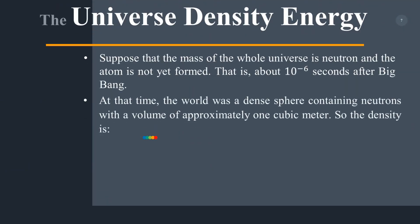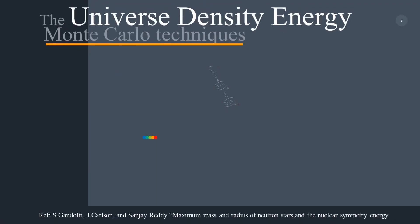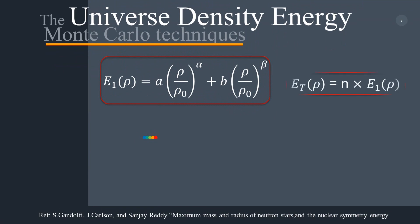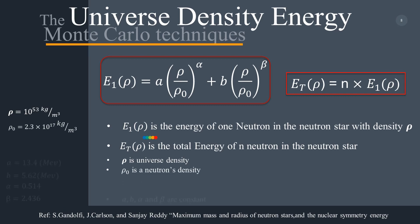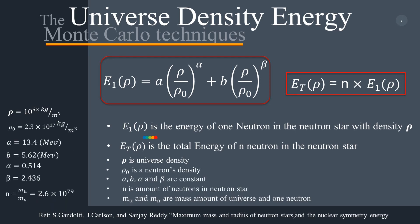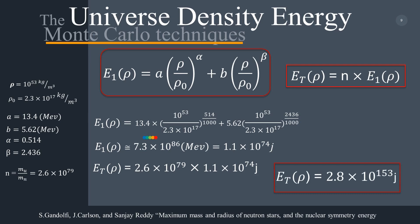At that time the universe was a dense sphere containing neutrons with a volume of approximately one cubic meter. The density is 10 to the power of 53 kilograms per cubic meter. Here, E1(ρ) is the energy of one neutron in the neutron star with density ρ, and E_total(ρ) is the total energy of N neutrons in the neutron star. The total energy is 2.8 × 10 to the power of 153 joules.